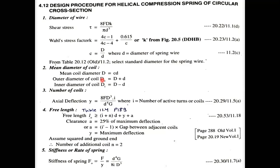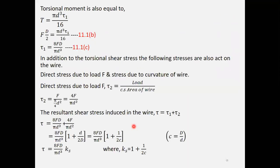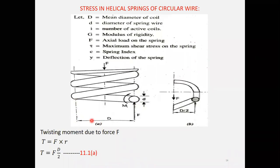Next, find the outer and inner diameter of the coil. Outer diameter equals mean diameter plus diameter of the wire. For inner diameter, you subtract the wire diameter from the mean diameter. Looking at the sketch, the outer diameter spans from the outer edge to outer edge, while the inner diameter is what remains after subtracting the wire diameter from the mean diameter.